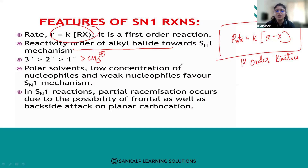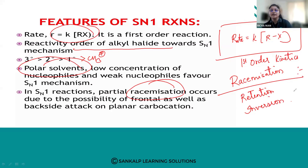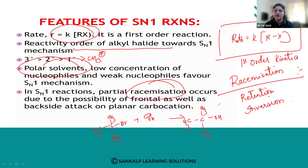Polar solvents with low concentration of nucleophile and a weak nucleophile favor SN1 mechanism. In SN1 mechanism, partial racemization takes place. To understand racemization, we need to understand retention and inversion of configuration.